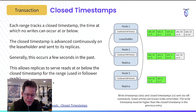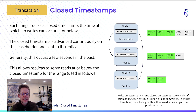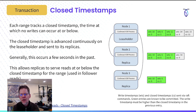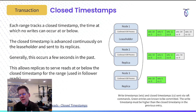Another important concept in transactions is closed timestamps. Each range — a contiguous logical chunk of data — tracks a closed timestamp: a time at which no writes can occur at or below. This closed timestamp is advanced continuously on the leaseholder and sent to its replicas, generally occurring a few seconds in the past. This ensures that no new changes will be introduced at a more recent point in time, making that historical data for the range essentially immutable and enabling things like follower reads.